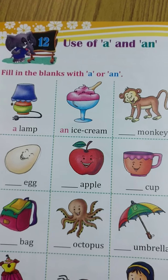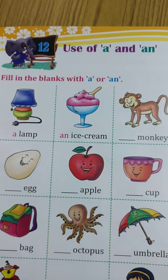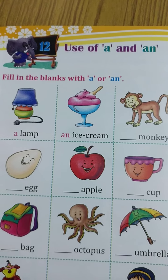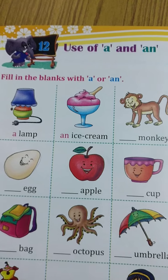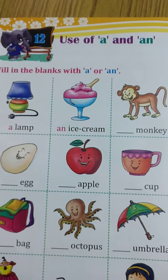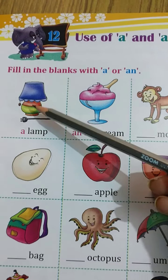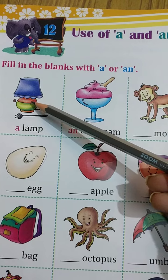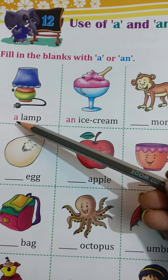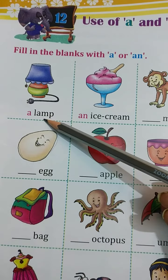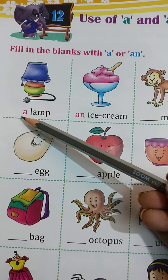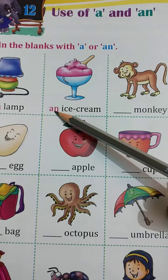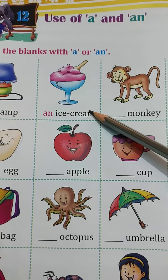A and AN are used before a person, place or a thing. Look at the example. This is a picture of a lamb — A, lamb. And AN, ice cream.